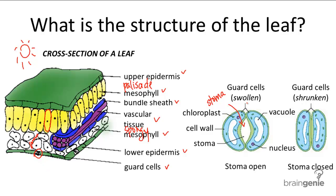As you can see in the diagram, the stoma open when the guard cells swell up by pumping their vacuoles full of water, and they close when the water is released from the vacuoles. They regulate the passage of gas exchange and water transpiration, and as we mentioned in the photosynthesis video, the stoma generally open during the day to let in CO2 and close at night to prevent water loss.